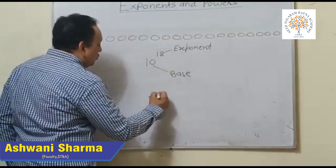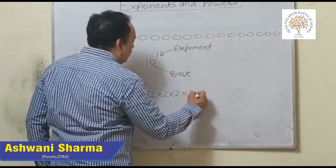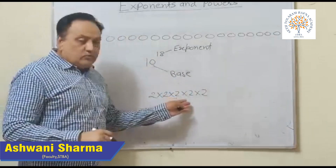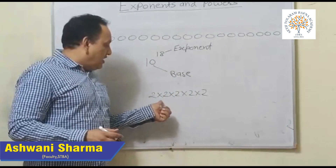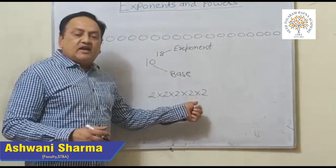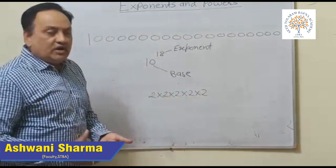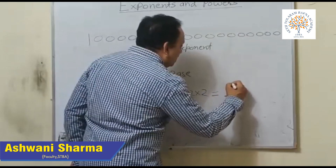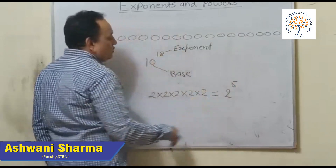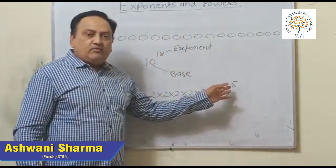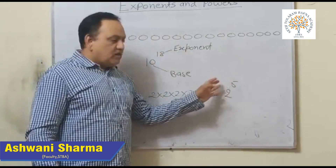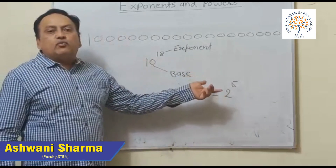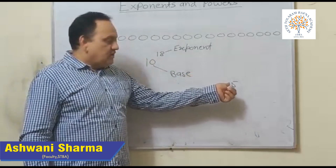If we write 2 into 2 into 2 into 2 into 2 — how many times do we repeat 2? Five times. Then we can write it in exponent form: 2 raised to the power 5. This is in exponent form, and it is easy for us to write it as 2 to the power 5.